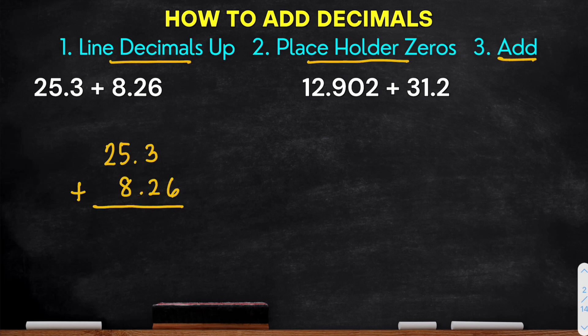For example, if you place it like 25.3 plus 8.26 misaligned, this is not proper. Okay, if you do that, it will give you an incorrect answer.